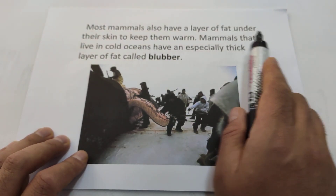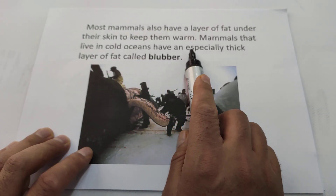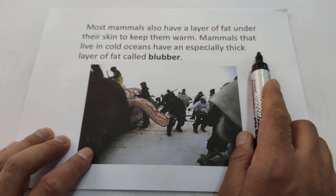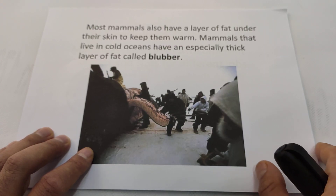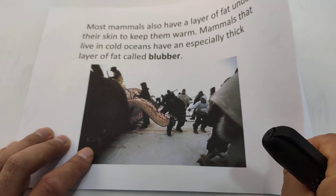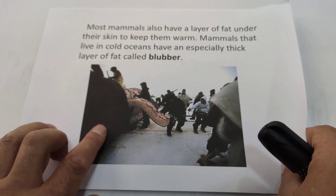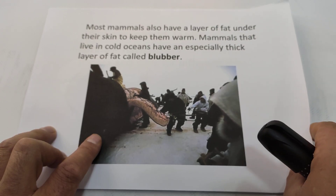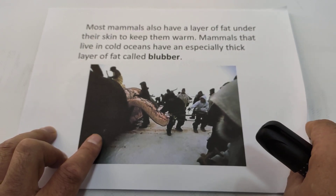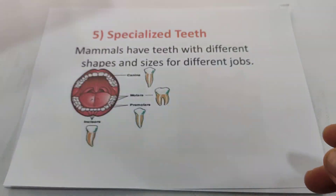Mammals that live in cold oceans have an especially thick layer of fat called blubber. For example, the dolphin. Dolphin is a mammal, students — don't forget, they are not fish.